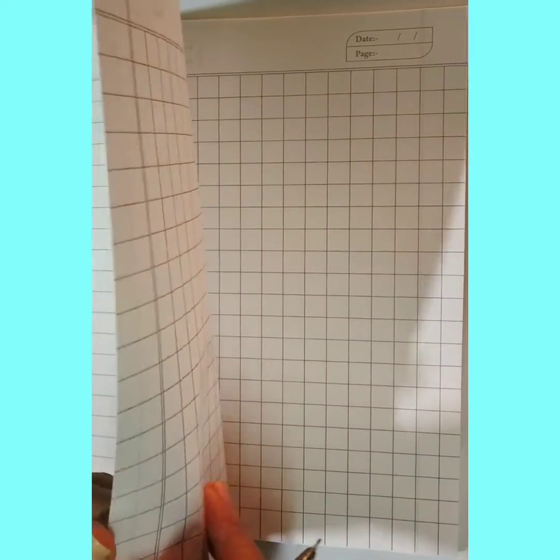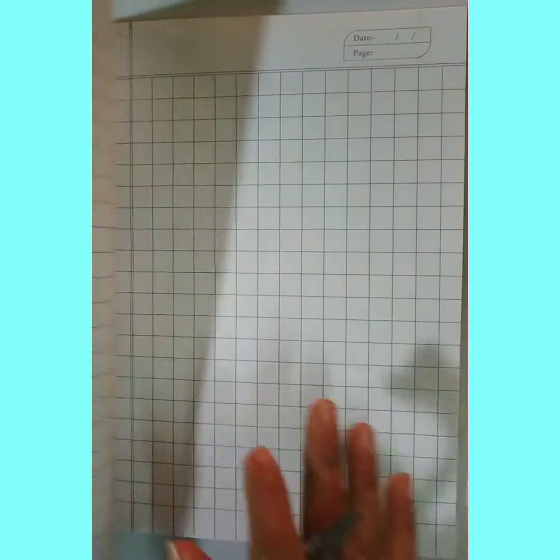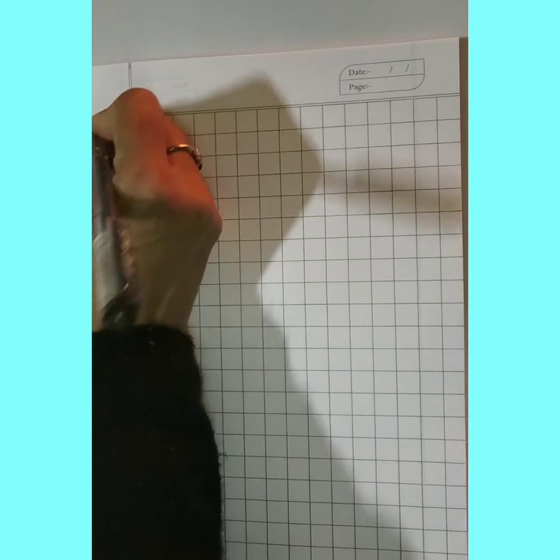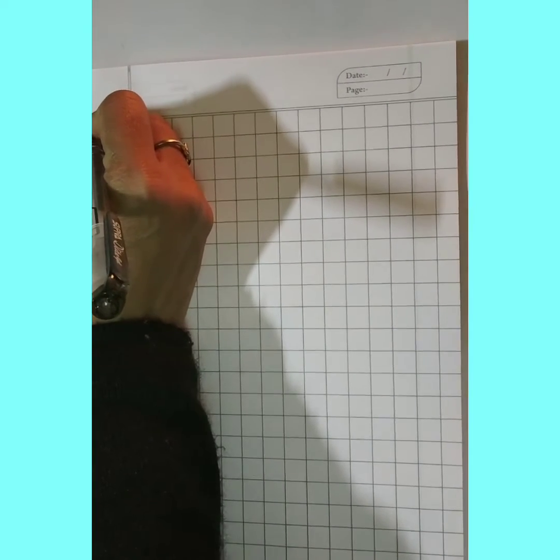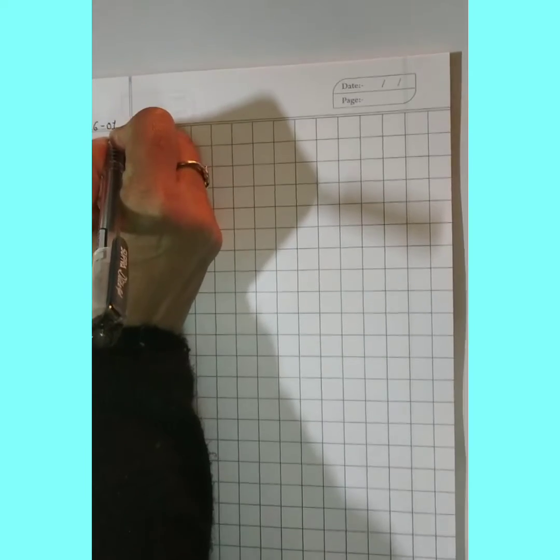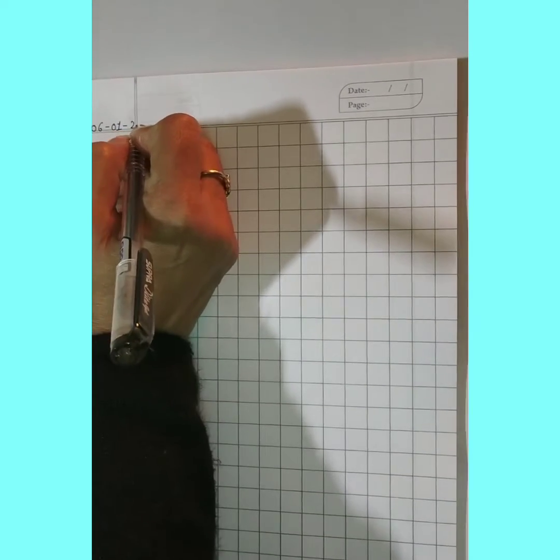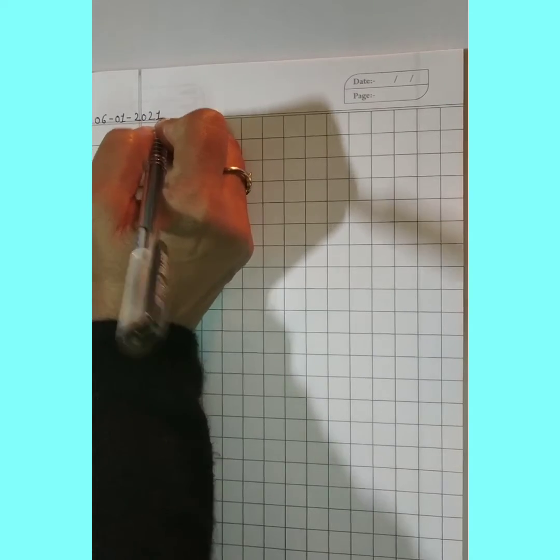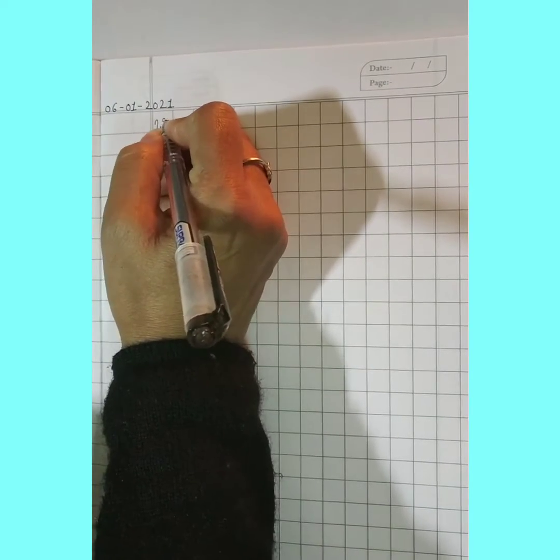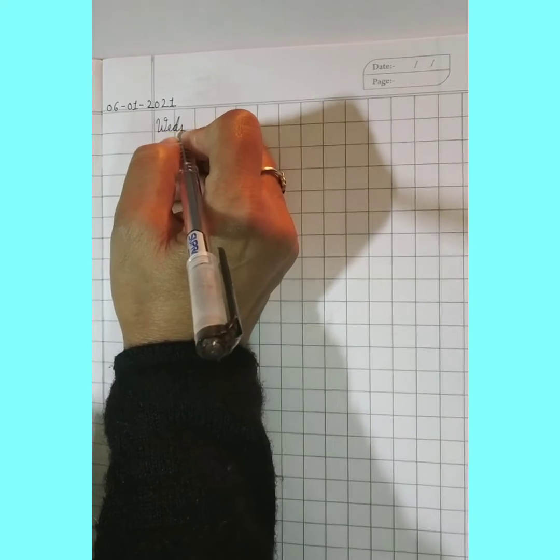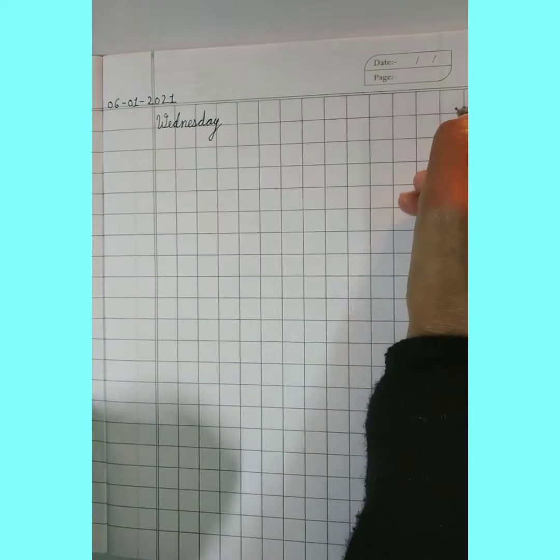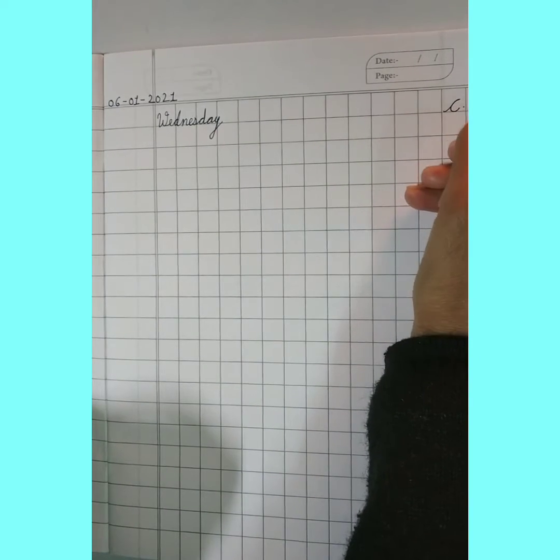Now come to the next page and firstly write down here the date. Today is 6th January 2021, and the day is Wednesday. This is your classwork.